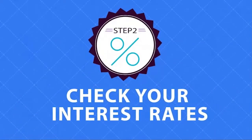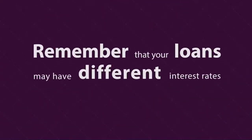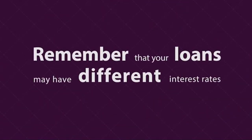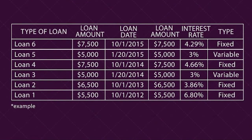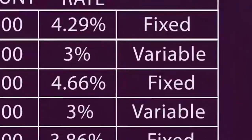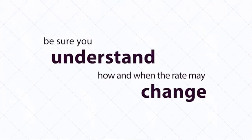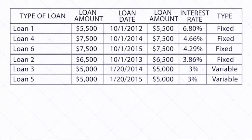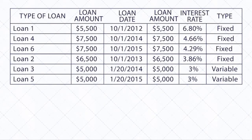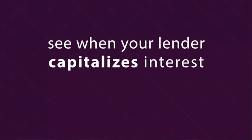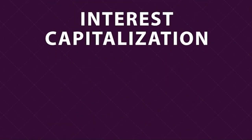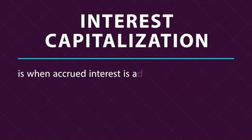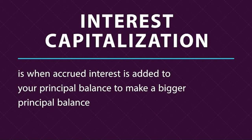Step two: check your interest rates. Remember that your loans may have different interest rates. Note the interest rate next to the loan balance and check if the rate is fixed or variable. If it's variable, be sure you understand how and when the rate may change. Rank your loans by interest rate — paying off loans with higher interest rates first while making minimum payments on the other loans could save you money. While you're checking on interest, see when your lender capitalizes interest. Interest capitalization is when accrued interest is added to your principal balance to make a bigger principal balance.